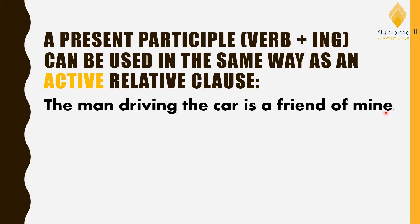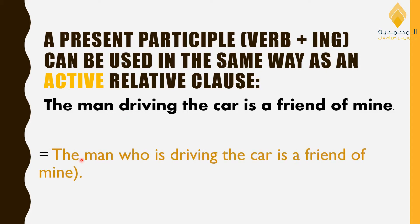Let's look at the example: 'The man driving the car is a friend of mine.' The present participle here is 'driving'. Can you think of the clause it has replaced? The original sentence was: 'The man who is driving the car is a friend of mine.' That is the relative clause, and 'is driving' is the present continuous in the active form.